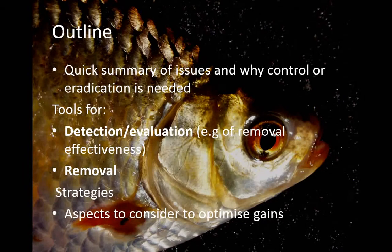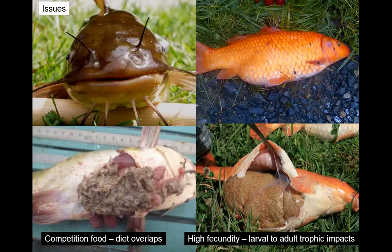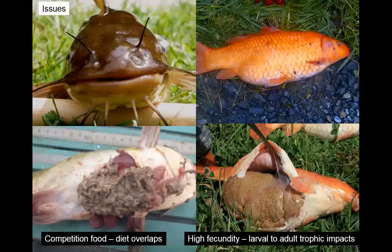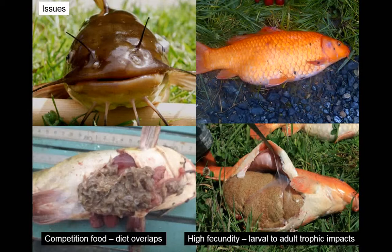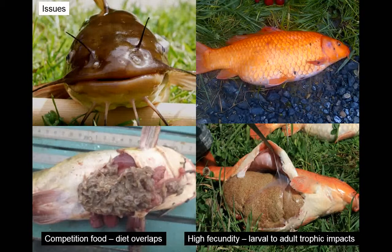Very quickly, the problems with invasive fish, particularly in Waikato, are varied. The directions in which these impacts occur are quite variable amongst the species. Here's a big fat catfish that's been gorging on mice and shrimp, directly overlapping with diets of some native fish like longfin eel. These fish are generally very tolerant of poor water quality and also very fecund, so you have large numbers of fish occupying the water space at any one time and having trophic-level impacts.